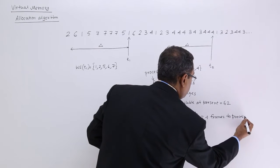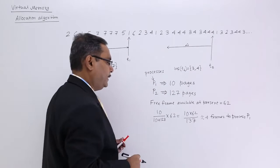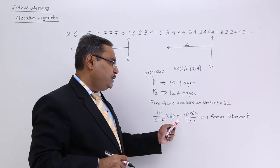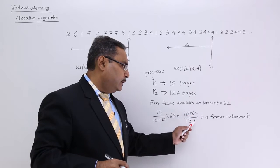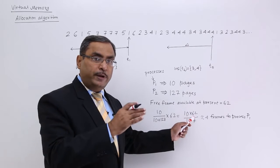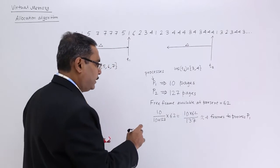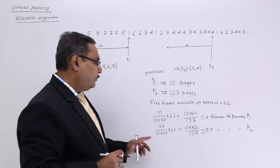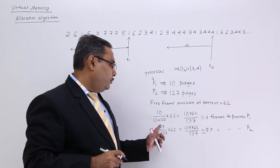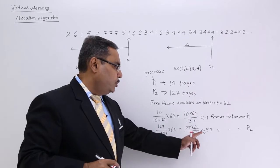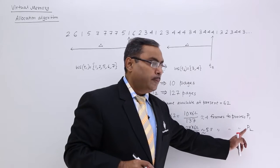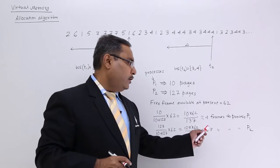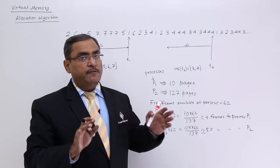For the other process P2, the calculation is (127 / 137) × 62, which gives almost 57 frames. Adding them: 4 plus 57 equals 61, and 61 is less than 62, so the frames can be allocated.